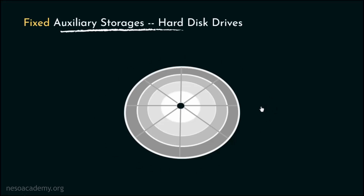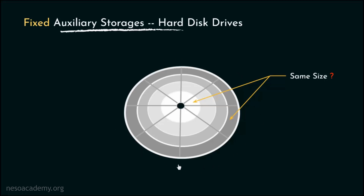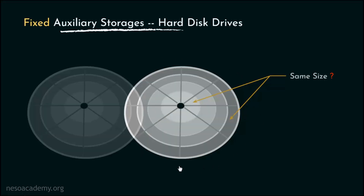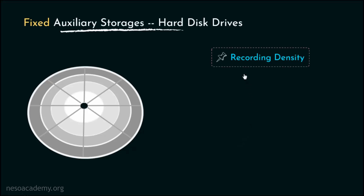The question remains: how can the size of the inner sector and the sector of the outer track be the same? How can all the sectors be of the same size? Well, this happens due to the phenomenon called recording density.